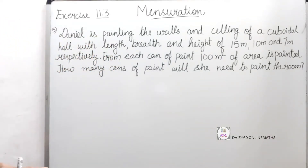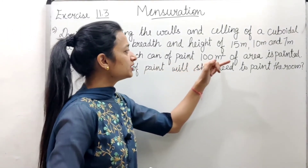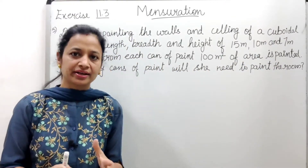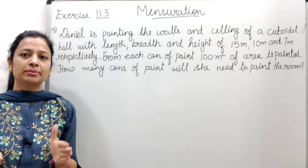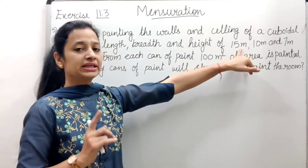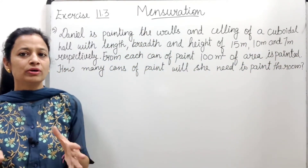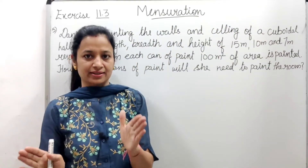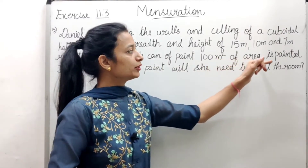The question is: Daniel is painting the wall and ceiling of a cuboidal hall with length, breadth and height of 15 meters, 10 meters and 7 meters respectively. From each can of paint, 100 square meters of area is painted. The cuboidal hall has walls and ceiling to paint.